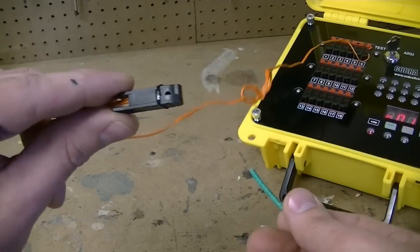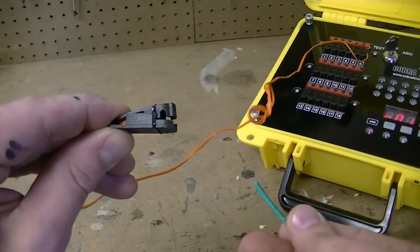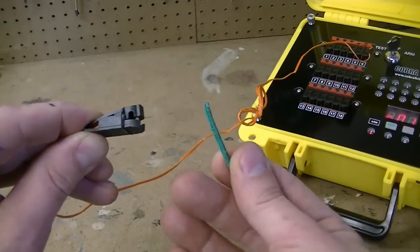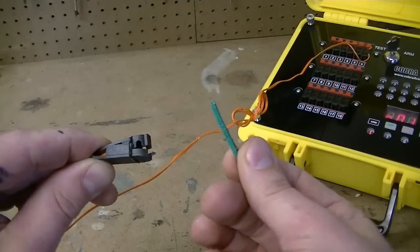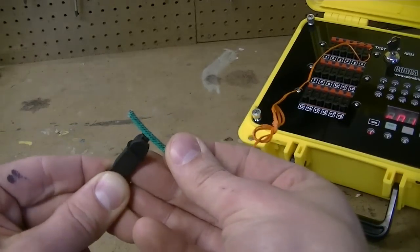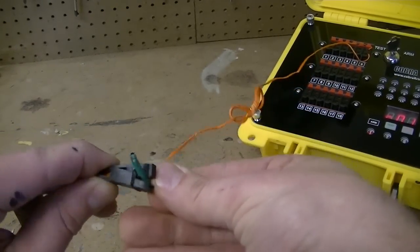You first take your talon igniter clip and you pry it open, kind of like a clothespin. Then you take your VSCO fuse, kind of like a clothesline, and you place that clothespin right over the clothesline.